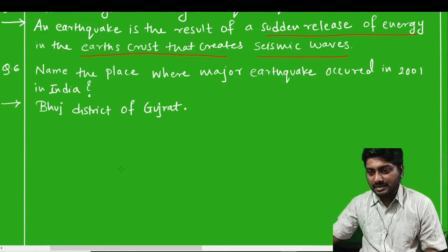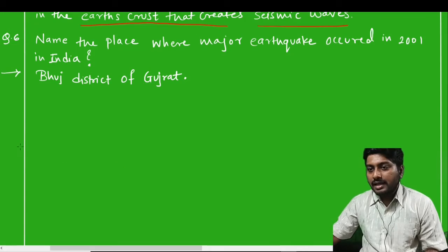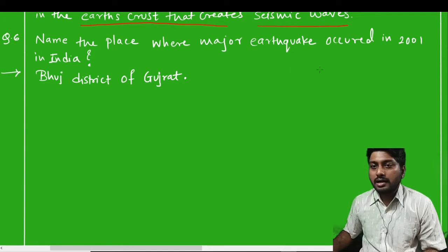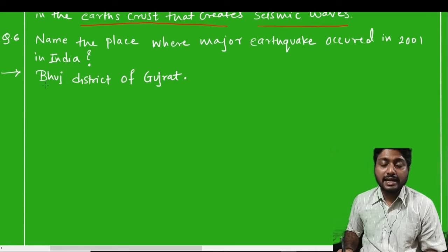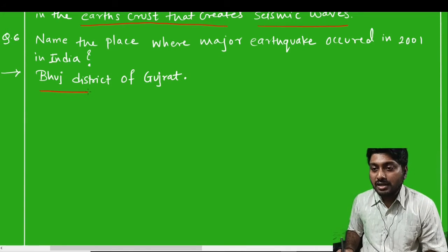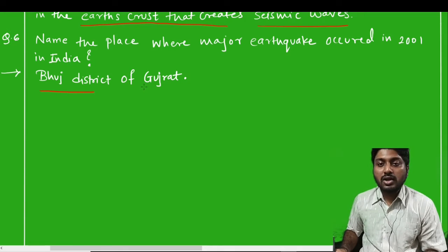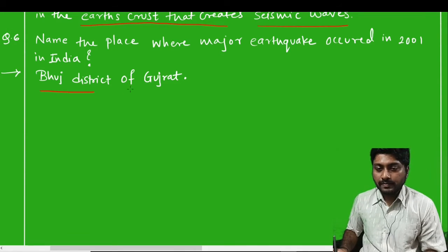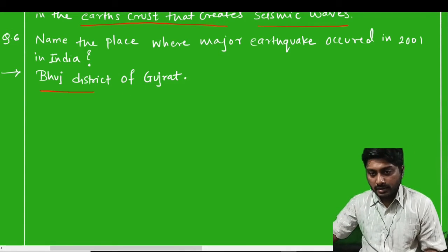Question number six: name the place where the major earthquake occurred in 2001 in India. The answer is the Bhuj earthquake in Gujarat, which occurred in 2001 and created huge destruction in Gujarat.